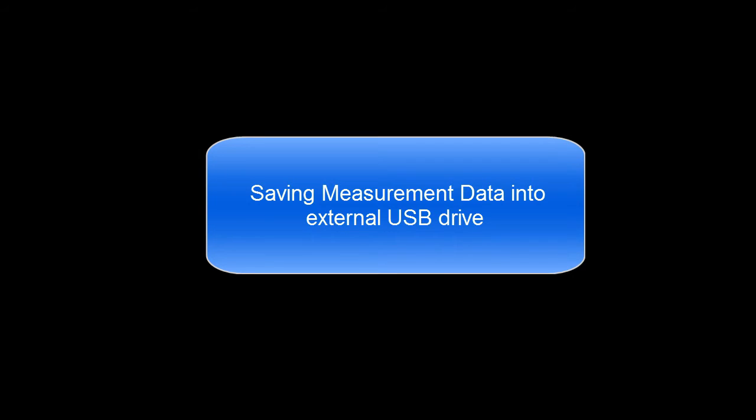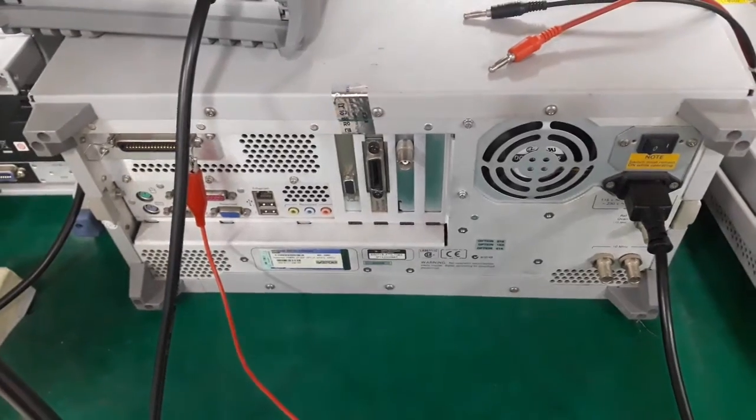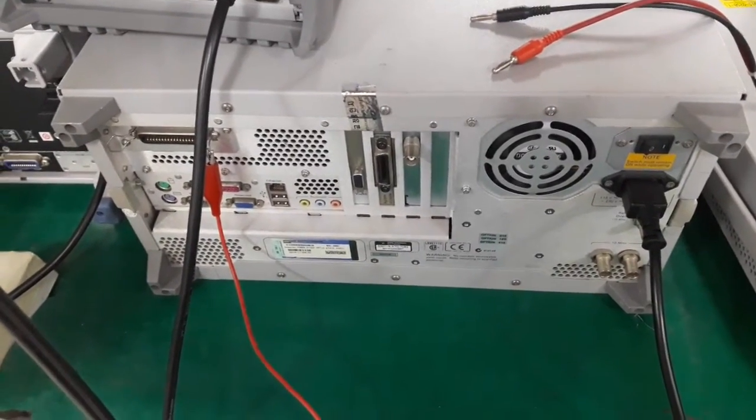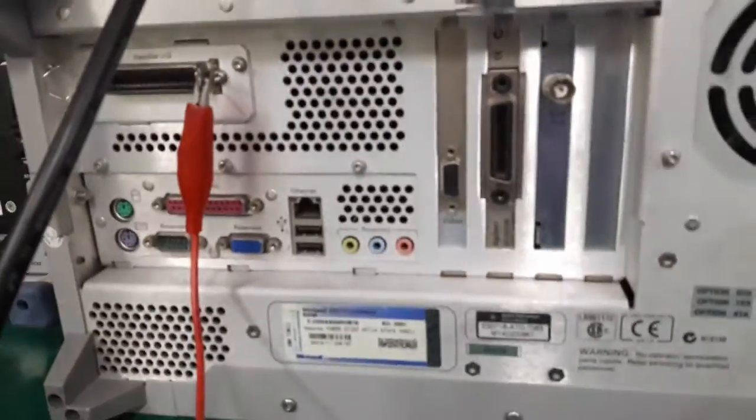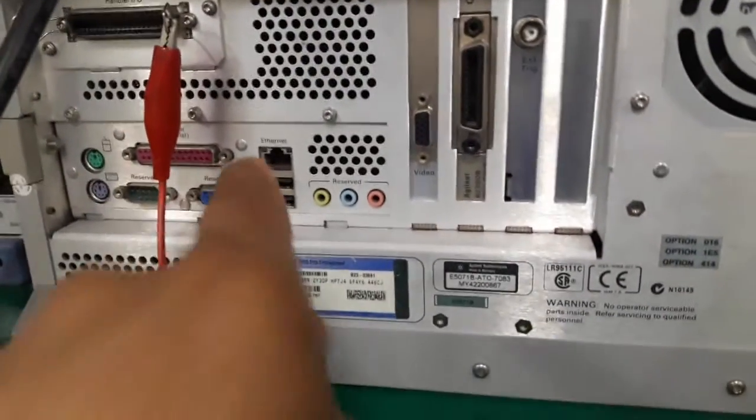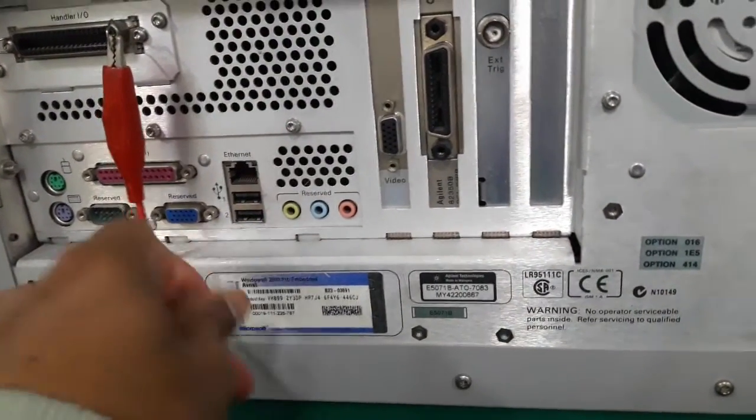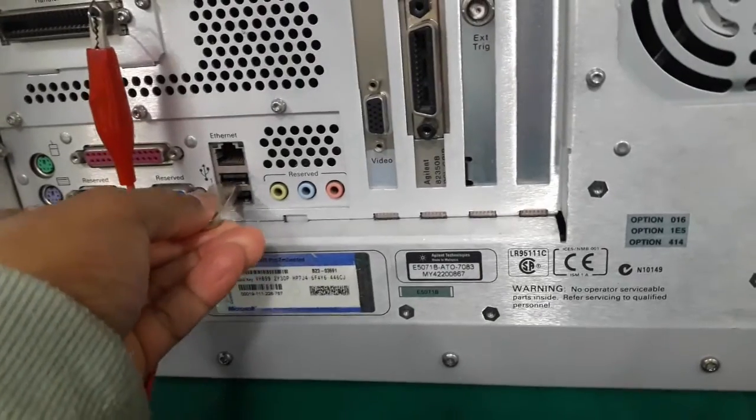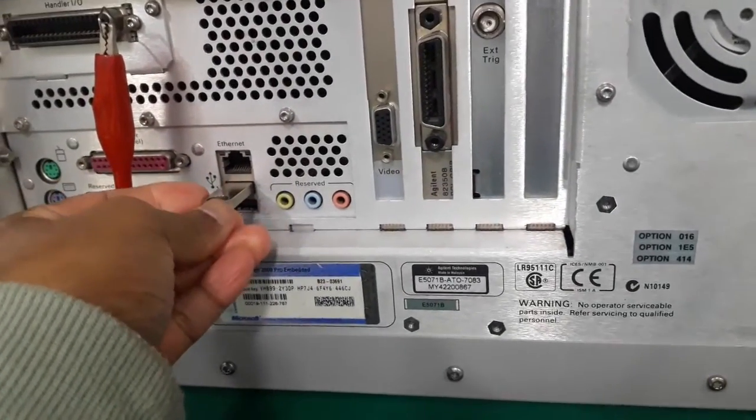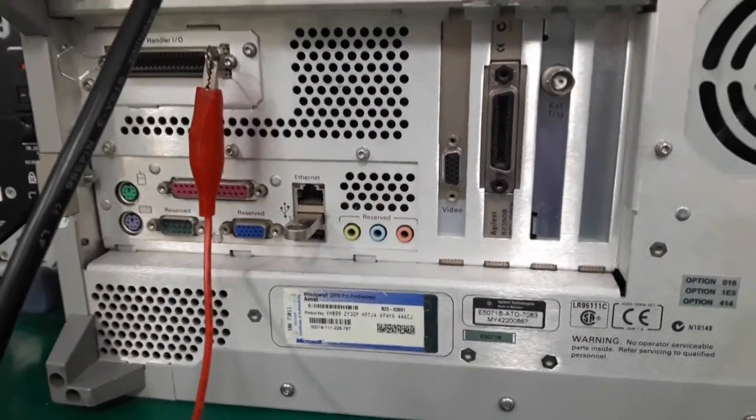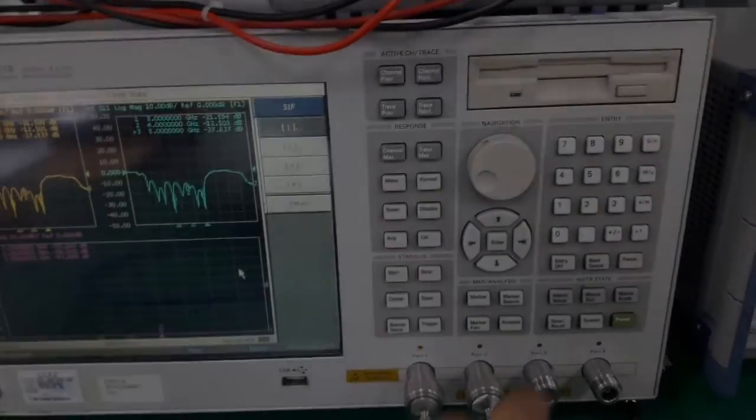Now let's see how to save this measurement data into an external USB drive. Our network analyzer has some USB ports. This is the back panel of the network analyzer. And I'm going to insert my USB drive into this port. Notice the numbers written beside this port. So I'm inserting into port 1. Alright. Now let's go back to the front panel.